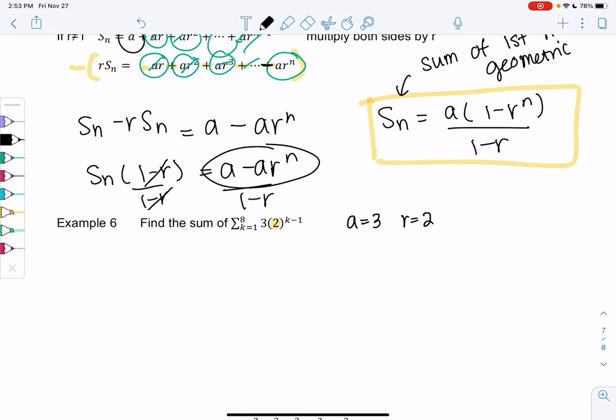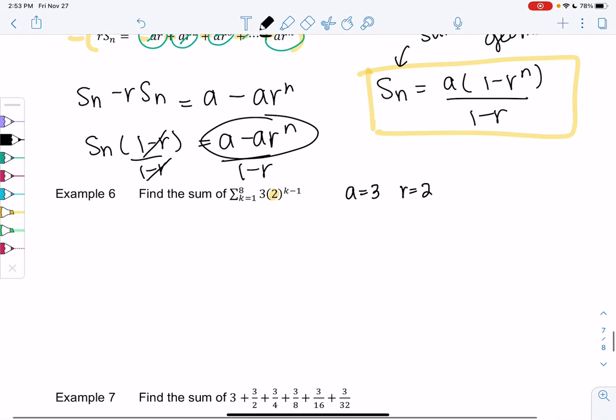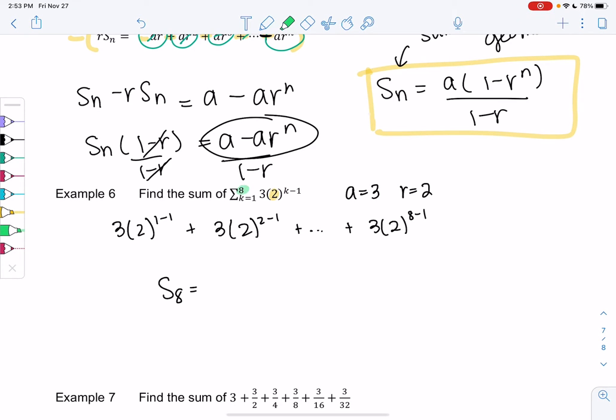We want to find the sum of the first 8 terms. Option 1 is you plug in all these numbers and add them up, but you have to do this until you get to the 8th term and I don't really want to do that. That's why we have this nice shortcut formula.